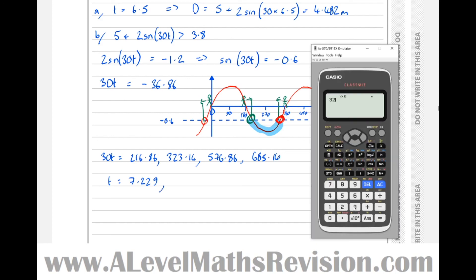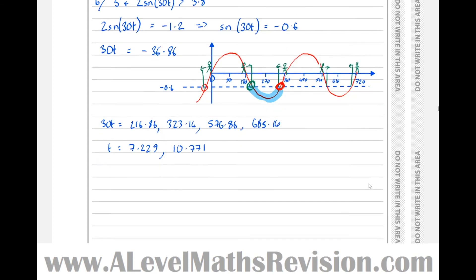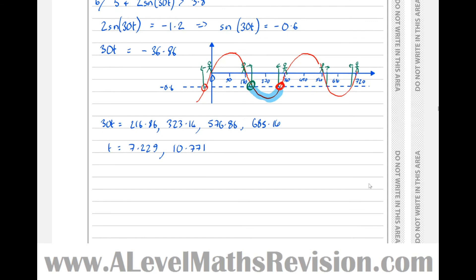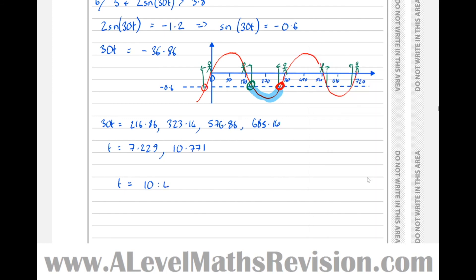So 323.14 divided by 30 is 10.771, which is our solution. We'll need to put it in time format now. So t equals 10, then take the non-integer part, 0.771, times 60 to give us the minutes: 10:46 is the time that the boat can leave the harbor.